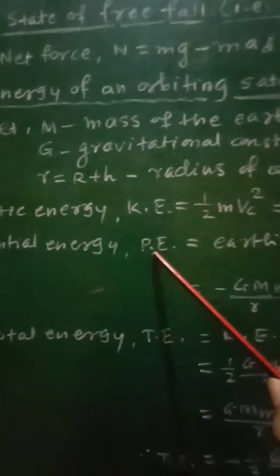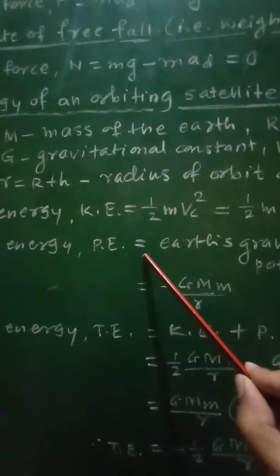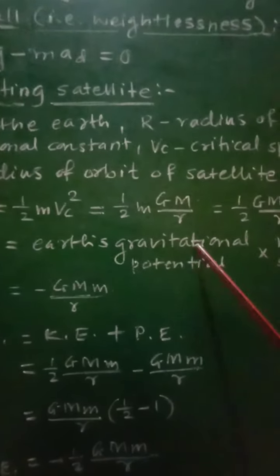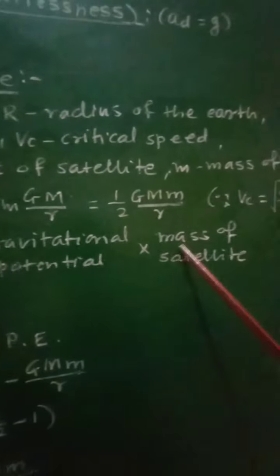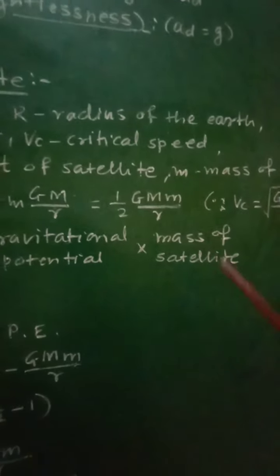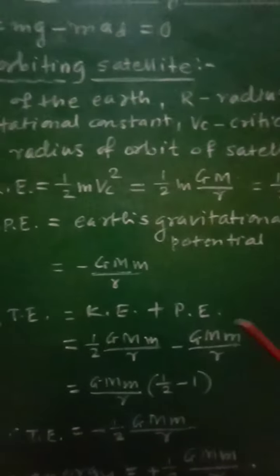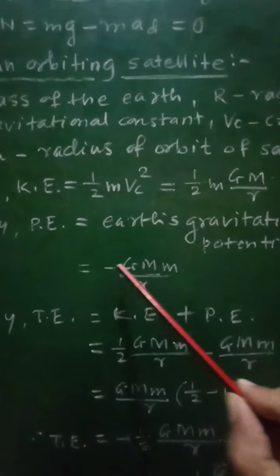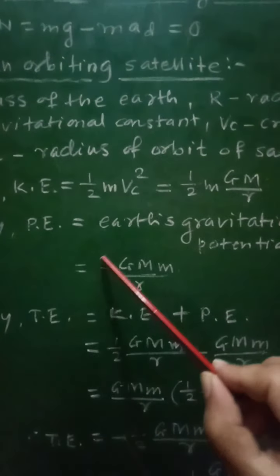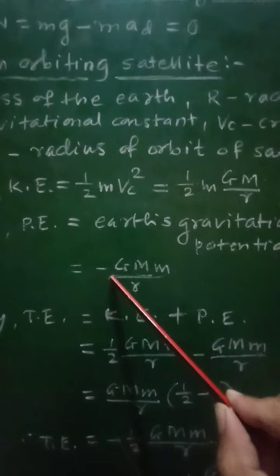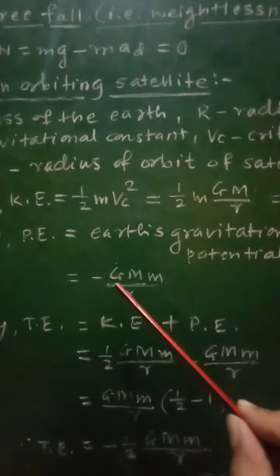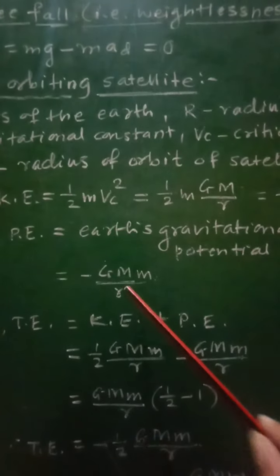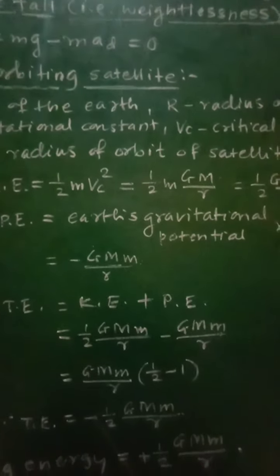The potential energy PE is given as the product of Earth's gravitational potential and mass of the satellite. Therefore, PE equals minus GM upon r, multiplied by mass of the satellite m, giving potential energy equal to minus GMm upon r.